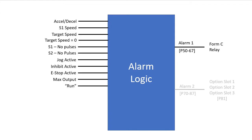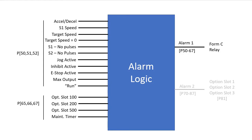You can also monitor if any of the option card's alarms are active and if the maintenance timer has expired. I have them separated because these use parameters 50 through 52 while these use parameters 65 through 67.